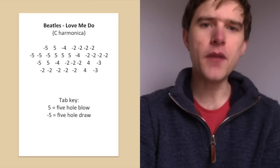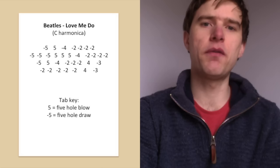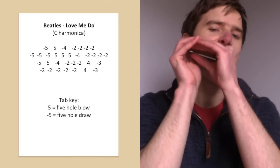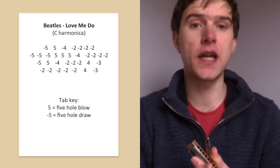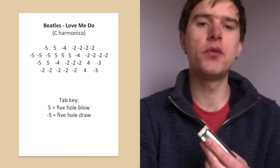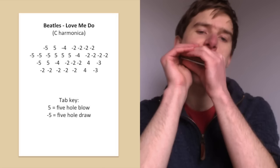So the piece starts on five draw. So our first line is... five draw, five blow, four draw and then it's two draw or three blow. I put two draw in the tab but you could play three blow four times. So five draw, five blow, four draw and then two draw four times.